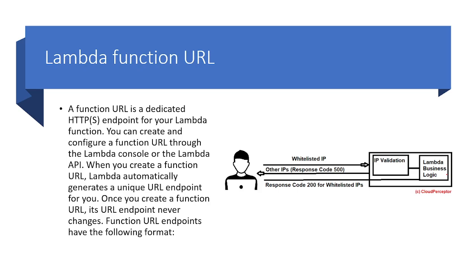Function URL endpoints have a specific format — I'll explain and show you what kind of format it returns on my AWS management console in the next part. This is how we are going to configure our Lambda function.